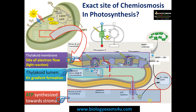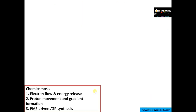ATP is synthesized toward the stroma of the chloroplast and will be utilized for the light-independent reaction or Calvin cycle. Now, according to chemiosmosis as proposed by Peter Mitchell, three events occur during ATP synthesis: electron flow and energy release; proton movement and gradient formation; and finally, proton motive force-driven ATP synthesis by ATP synthase.